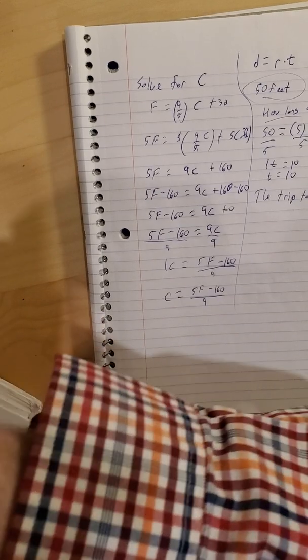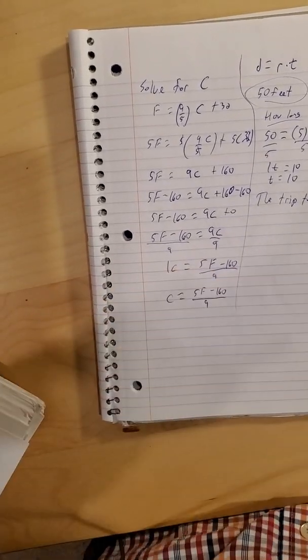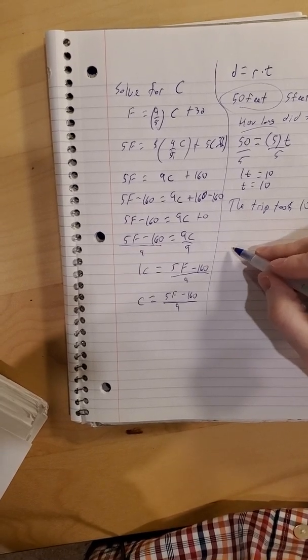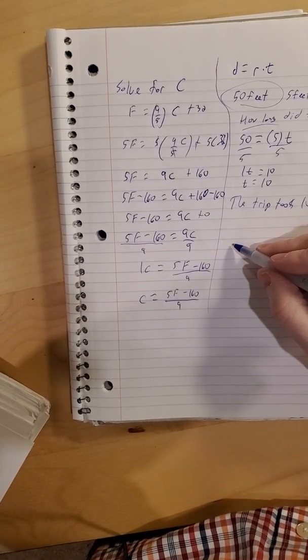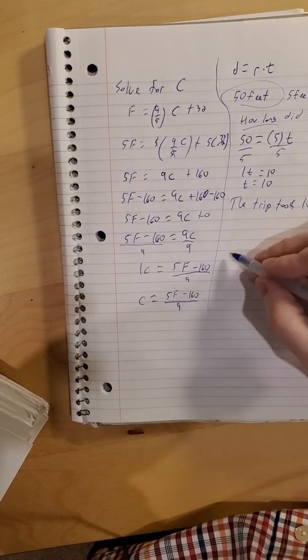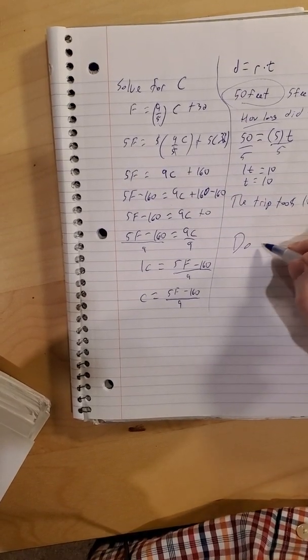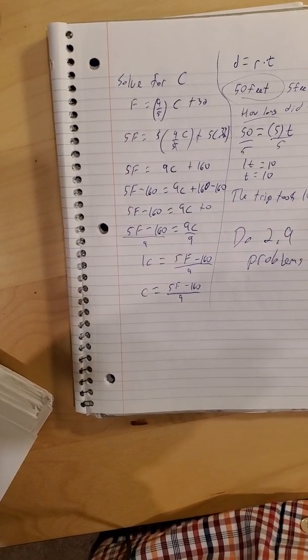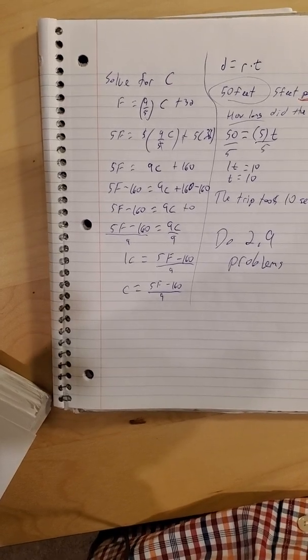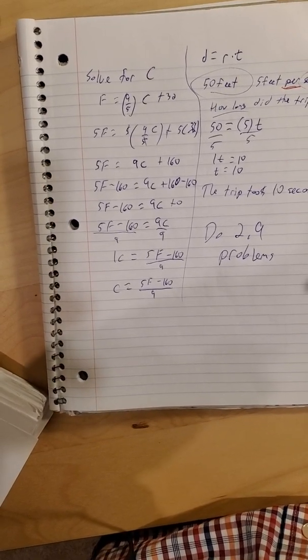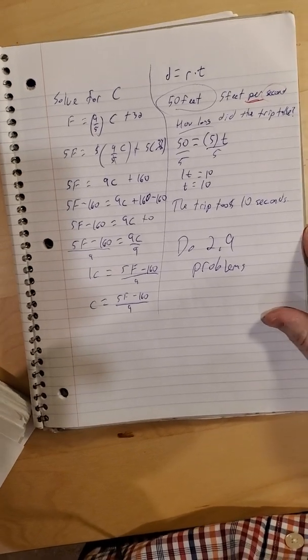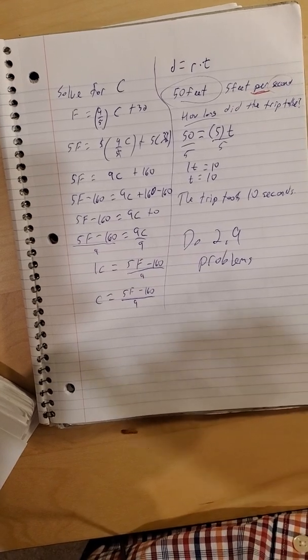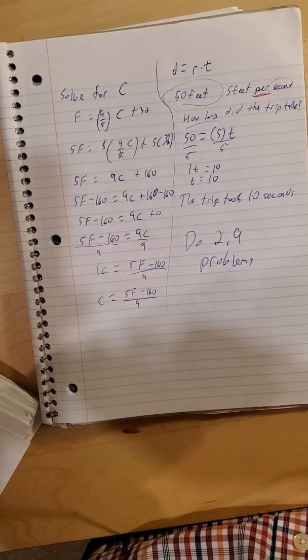All right, so that should be enough for you to finish your 2.9 problems from the book. Keep checking your email, keep checking Moodle, and of course keep checking the school's website. So do the 2.9 problems. And again, just check your email. If you have questions that you want to ask me, of course feel free to ask. Stay safe. Hope you and your family are well, and hopefully we get together soon. Thank you.